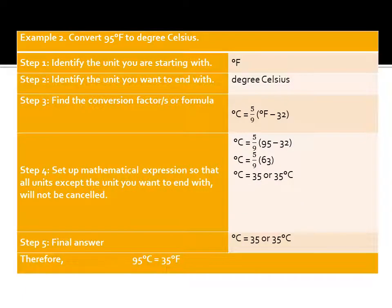Example 2: convert 95°F to degrees Celsius. Starting unit is degrees Fahrenheit; ending unit is degrees Celsius. Formula: °C = (5/9) × (°F − 32). Substitute: °C = (5/9) × (95 − 32) = (5/9) × 63 = 35°C. Therefore, 95°F is equivalent to 35°C.